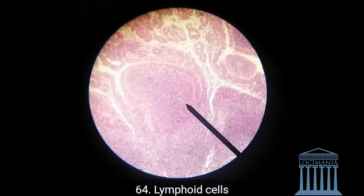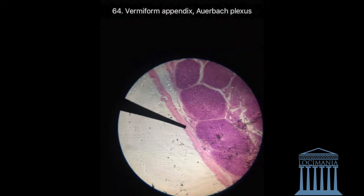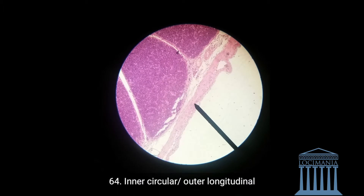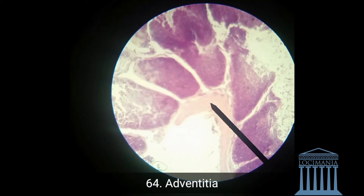Here I'd like to show you the Auerbach's plexus. Then here we have the muscularis — the inner circular muscle and then the outer longitudinal muscle. We also have the adventitia with blood vessels.